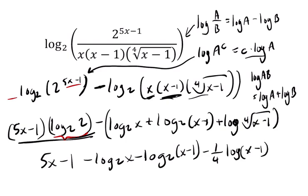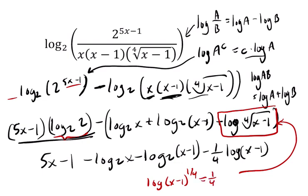And all I did for that last part is using my clog law again to rewrite this. Thinking of it as log of x minus 1 to the 1 fourth. That is the fourth root. If you bring that 1 fourth in the front, you get what I wrote there.